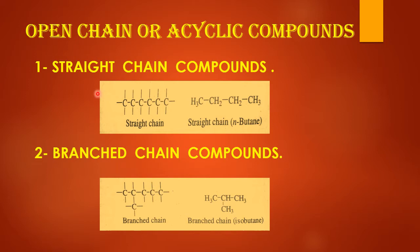Open chain or acyclic compounds may be straight chain compounds or branch chain compounds. Straight chain compounds may be one carbon compound, two carbon compound, and many number of carbon compounds. In branch compounds, they have a branch where one of the carbon atoms may be attached in a branched position.